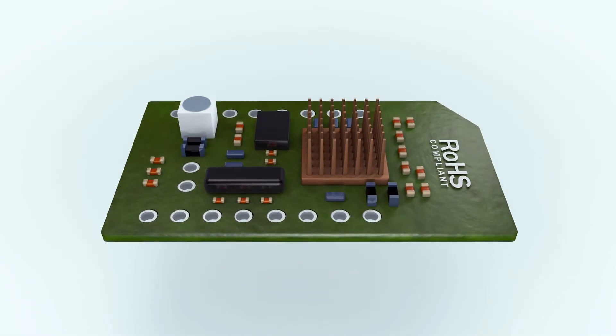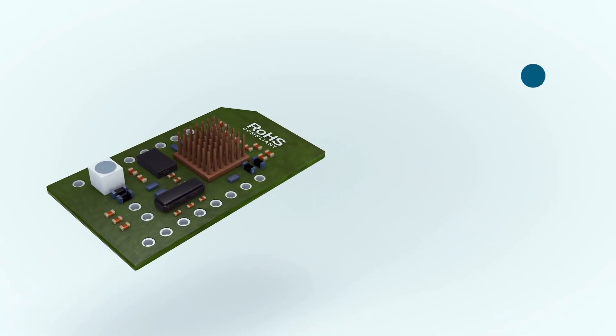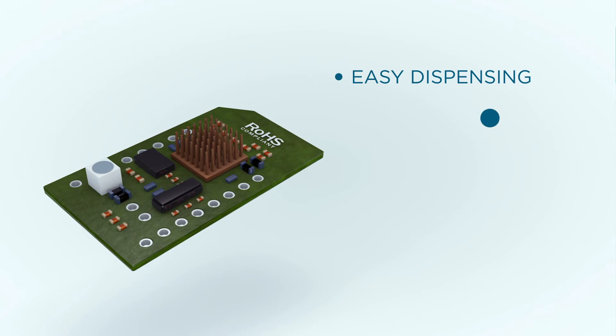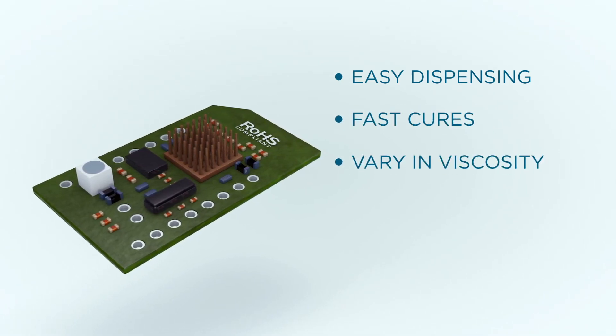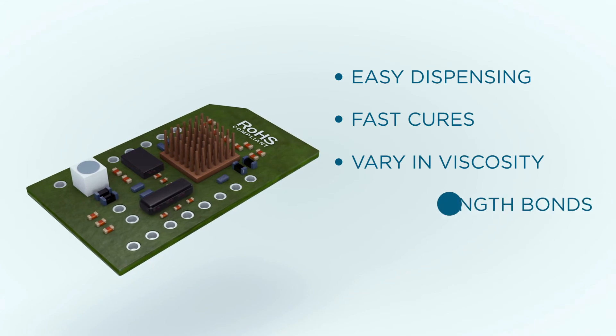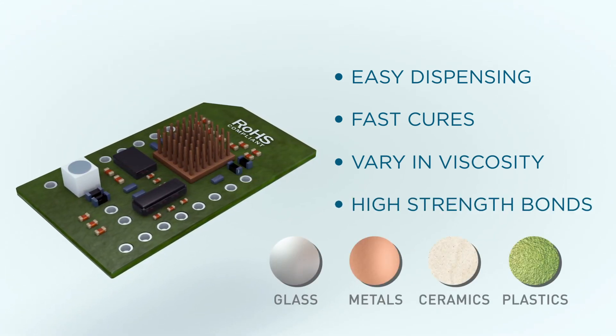Dual curing compounds open new opportunities for thermally sensitive substrates, while offering easy dispensing and incredibly fast cures. They are available in a range of viscosities and form high strength bonds to glass, metals, ceramics, and many plastics.